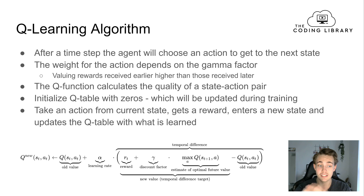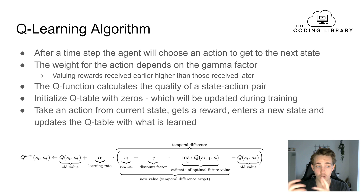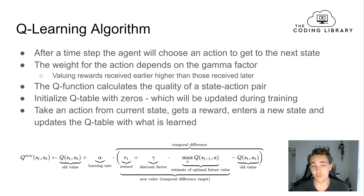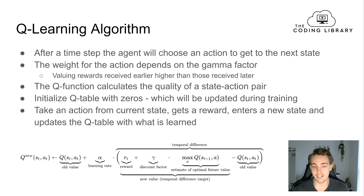In the algorithm, we first initialize the Q-table with zeros, and then it gets updated during training. We update all indexes in our Q-table using the Q-function. We take an action from the current state, receive a reward for that action, enter a new state, and then update the Q-table with what we've learned — including the reward received for taking that action from that state.